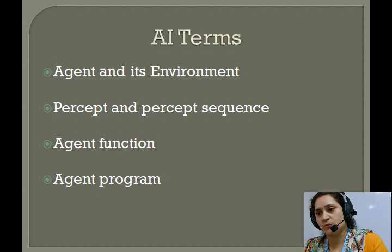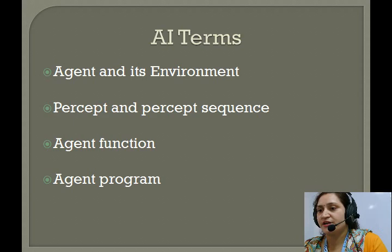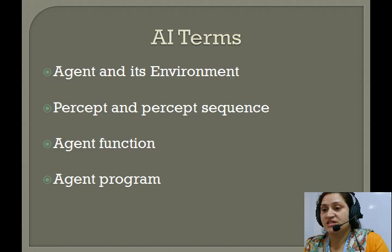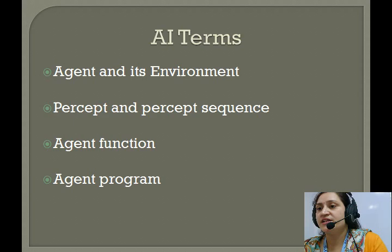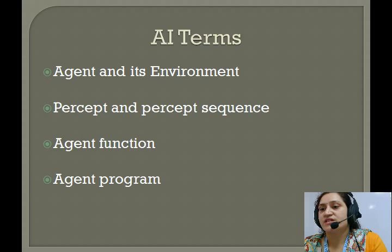Let us check the next point — percept and percept sequence. A percept is nothing but an agent's perceptual input at any given instant. For example, a boiler's temperature at a particular instant of time — that is a percept. A percept sequence is a complete history of everything that the agent has perceived. For example, a robotic agent continuously monitoring and sensing the temperature of the boiler — that is a percept sequence.